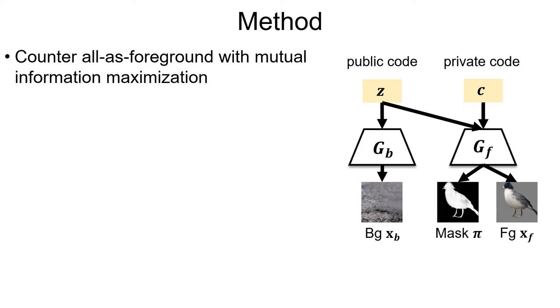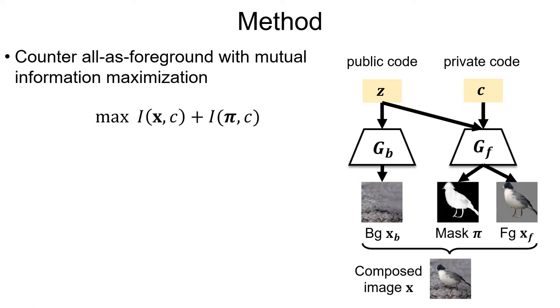We task the generator at maximizing two mutual information terms. First, we maximize the mutual information between the composed image X and the private code C. Considering this term, if an empty mask is generated, the composed image is all generated from the background generator. But the background is only conditioned on Z, thus the mutual information would end up with zero.